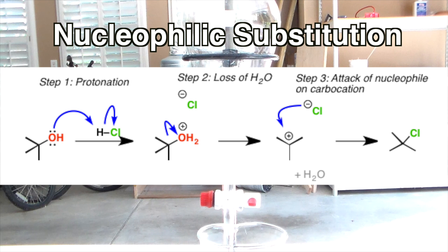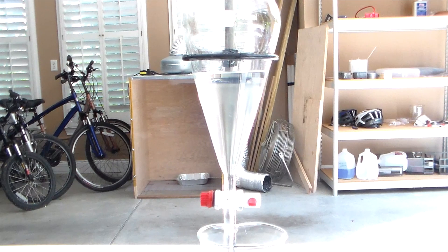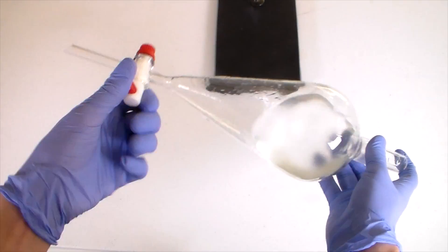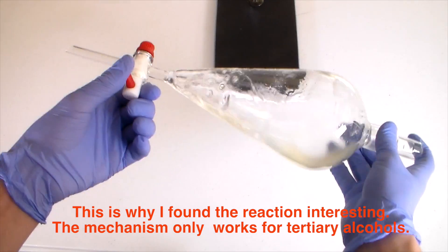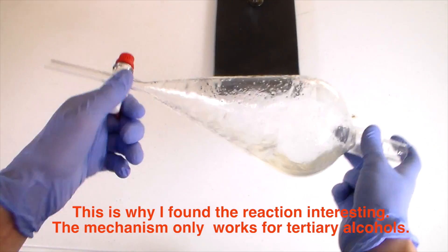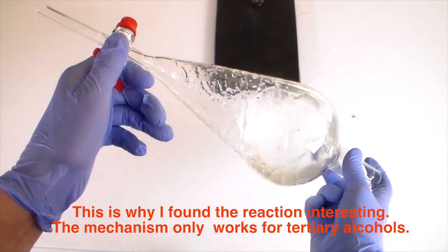The carbocation is easily attacked by the negative chloride ion, forming a carbon-chlorine bond and producing our tert-butyl chloride product. The specific reaction mechanism is called SN1. Again, I'm not going to fully explain SN1 reactions in detail, but what's important here is that SN1 mechanisms only really work for tertiary alcohols. This is because the carbocation of tertiary alcohols is much more stable than those of primary and secondary alcohols.